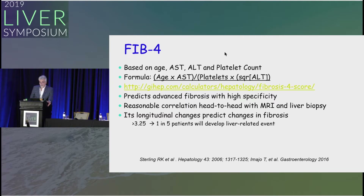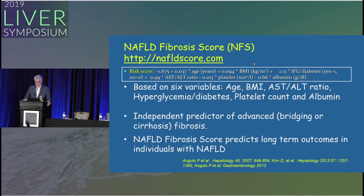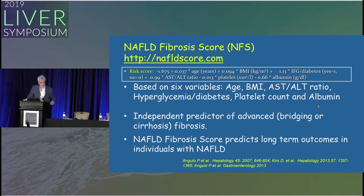I calculate the FIB-4 whenever I see a patient in clinic. The NAFLD Fibrosis Score uses six variables — age, BMI, AST/ALT ratio, diabetes, platelet count, and albumin — and is an independent predictor of advanced fibrosis or cirrhosis. It also predicts long-term outcomes in individuals with NAFLD.